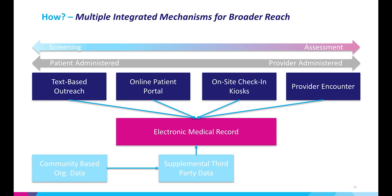There are a variety of mechanisms to screen and assess for social needs. Some approaches are patient-administered, others are provider-administered. Text-based outreach and pushing out questionnaires through patient portals are primarily patient self-reported mechanisms. On-site check-in kiosks are a mix between patient-administered and provider-supported. Questions asked by a clinical team member during a clinical encounter are considered provider-administered. The goal is usually to have information shared by patients about their social needs go back into the electronic medical record. Supplemental third-party data from publicly available sources and community-based organizations is also documented in the electronic medical record, ensuring actions are taken and resources are provided when social needs are identified, and enabling more informed clinical decision making.